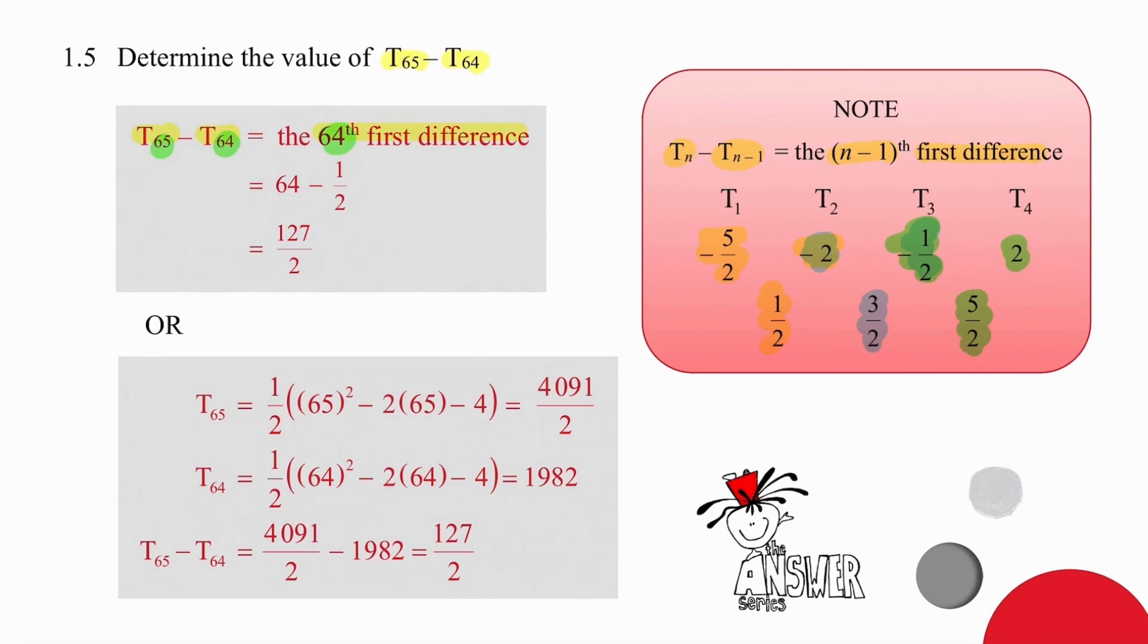When we take the 65th term and subtract the 64th term, we are getting the 64th first difference. We worked out earlier that we can create a formula for the first differences using n minus 1 half. So we simply substitute 64, subtract the half, and we will get 127 over 2.